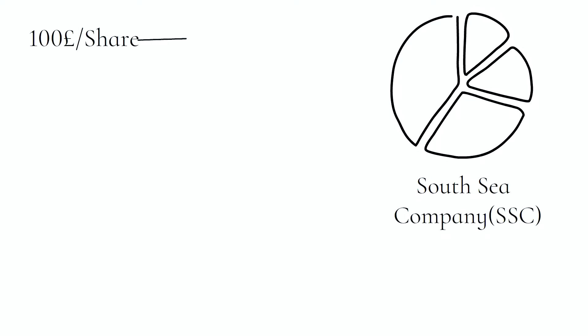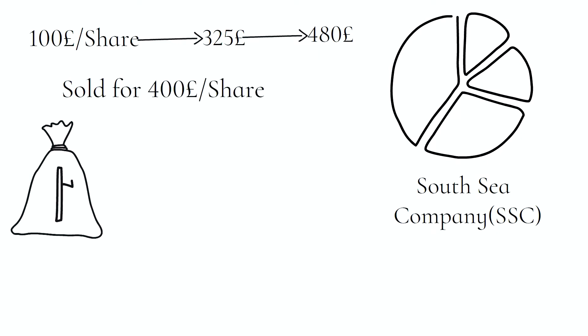In April, it was already 325 per share. By May, it was trading as high as 480 per share. Then Newton sold his shares for prices ranging from 400 to 500 pounds per share. He kept a good sum in return, estimated to be 7,000 pounds, around a million dollars now.